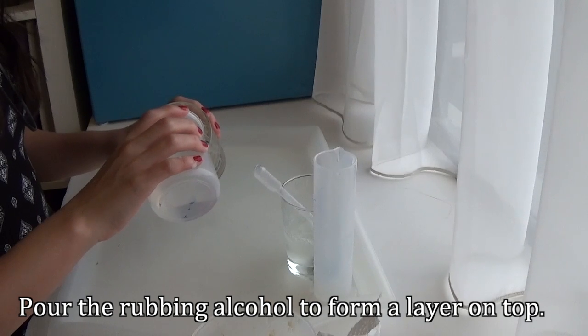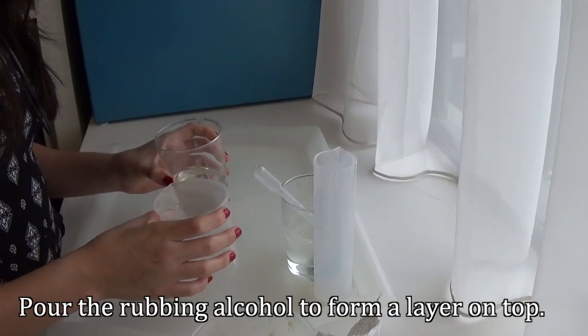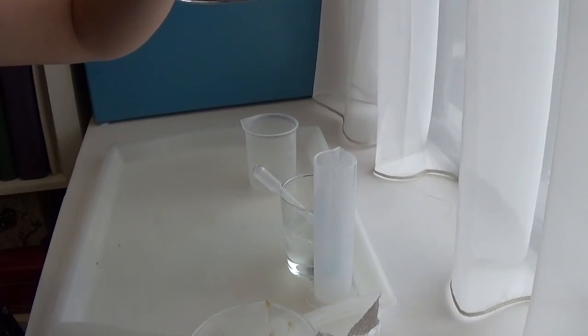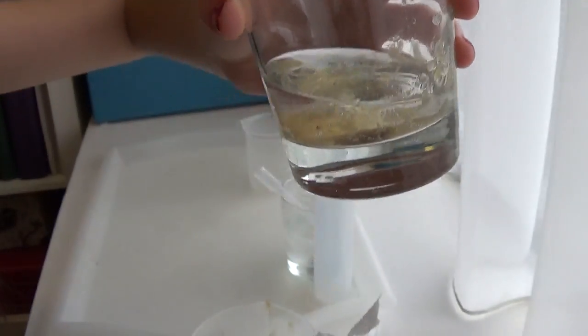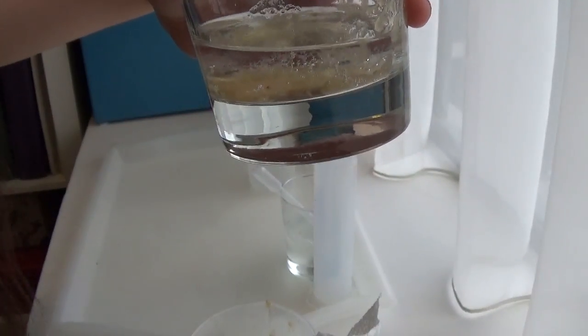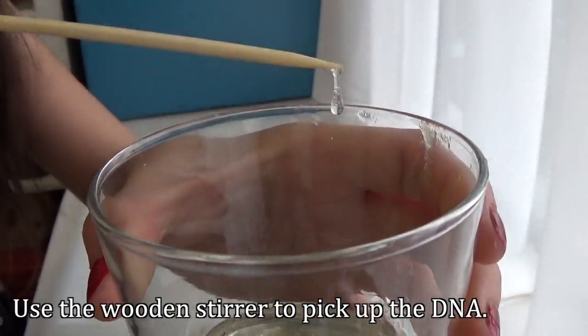Next, pour rubbing alcohol down the side of the glass with the banana liquid in it to form a layer on top. The DNA will separate out and float in between the layers. Use a wooden stirrer to pick it up.